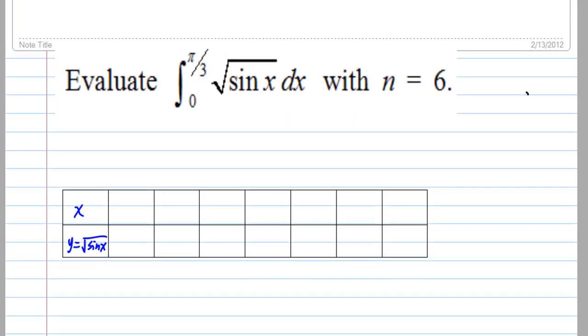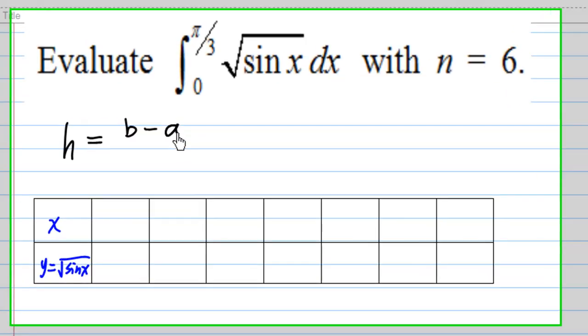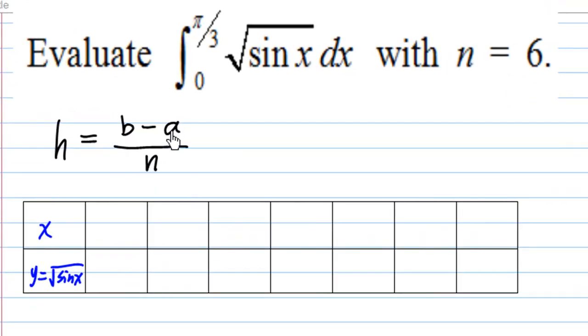First, we must find the width of the sub-interval. This notation is h, which is equal to b minus a over n, where b is the upper limit, π over 3, a is the lower limit, 0, and n is equal to 6. This gives us π over 18.